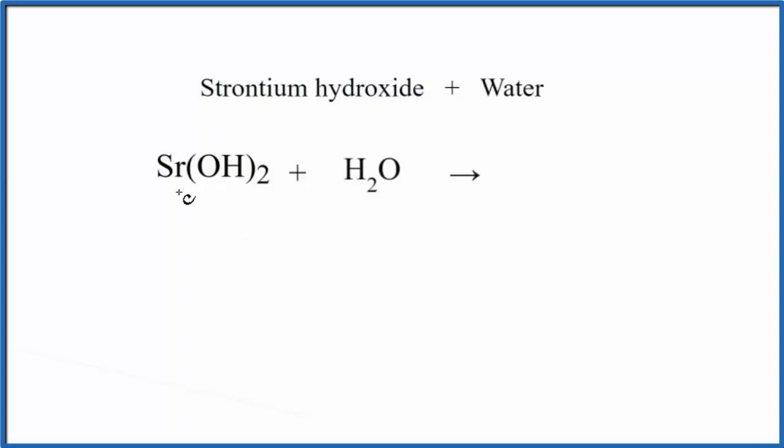In this video, we'll look at the equation for Sr(OH)2 plus H2O. This is strontium hydroxide plus water. We have a metal and some non-metals. This is an ionic substance here, so we're going to put S. It's going to be a solid, and then water, that'll be a liquid.